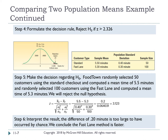Before computing z, note that the population standard deviations (sigma) are given — that is why we use z-statistics. From the data, the standard method is sample 1 and fast lane is sample 2. We are given x̄₁, x̄₂, σ₁, σ₂, n₁, and n₂. Plugging all this information into the z formula gives a z value of 3.123.